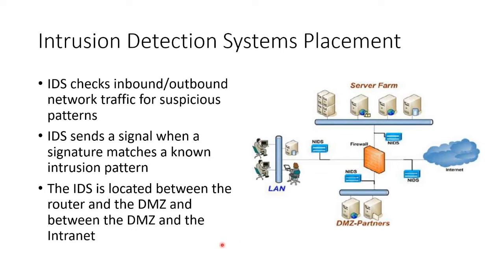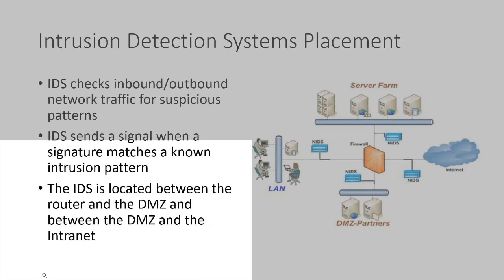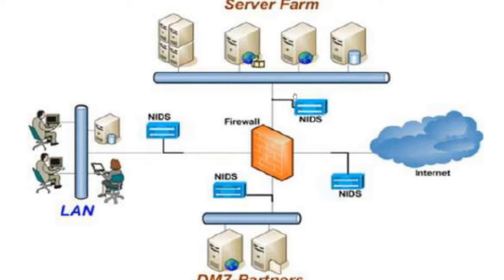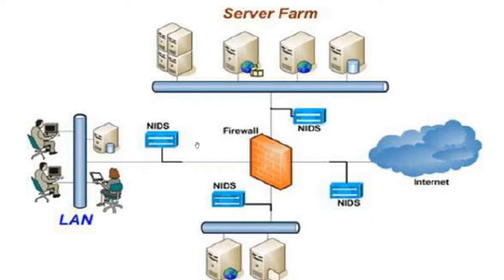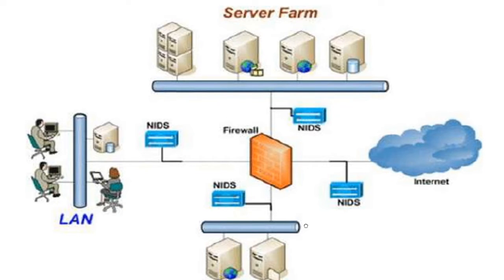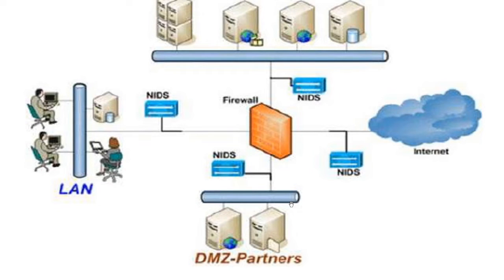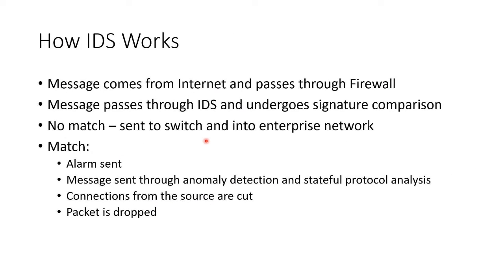You can have your IDS in a bunch of different locations. The most common places are right around the firewall. If your firewall has four network interfaces, you put a network-based IDS — a NIDS — on each of these so that you can be watching the servers, the internet, any DMZ devices, as well as the LAN. You put network-based IDS anywhere where traffic can come in and out of that part of the network.